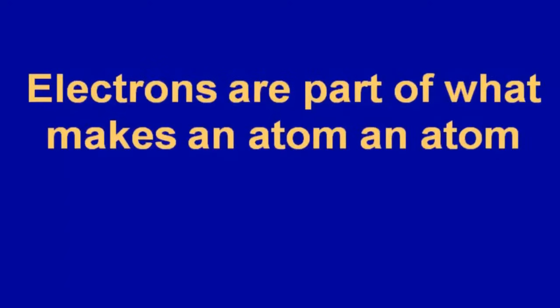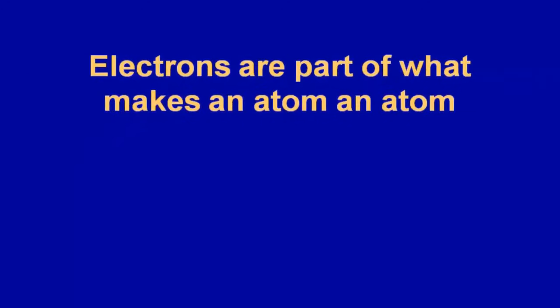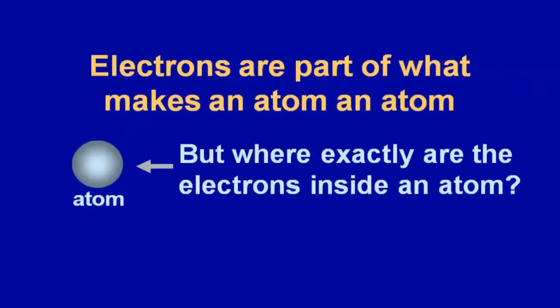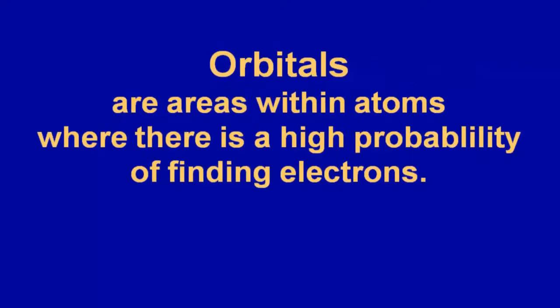Atoms are made out of electrons, protons, and neutrons. Electrons are very important — the arrangement of electrons really dictates how atoms will interact with each other. But we don't really know where electrons are inside an atom. We can define areas where they are with some high probability, but we can never really know exactly where they are. And so we define these areas as orbitals. Orbitals are areas within atoms where there is a high probability of finding electrons.